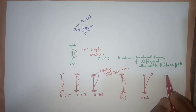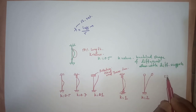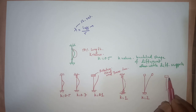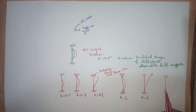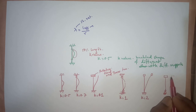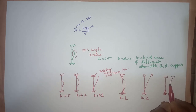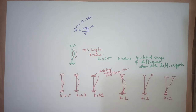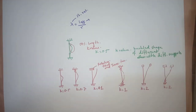Another case is when one end is rotation-fixed and translation-free and the other end is pin-connected. The buckling shape for this condition gives k equal to 2 as well.